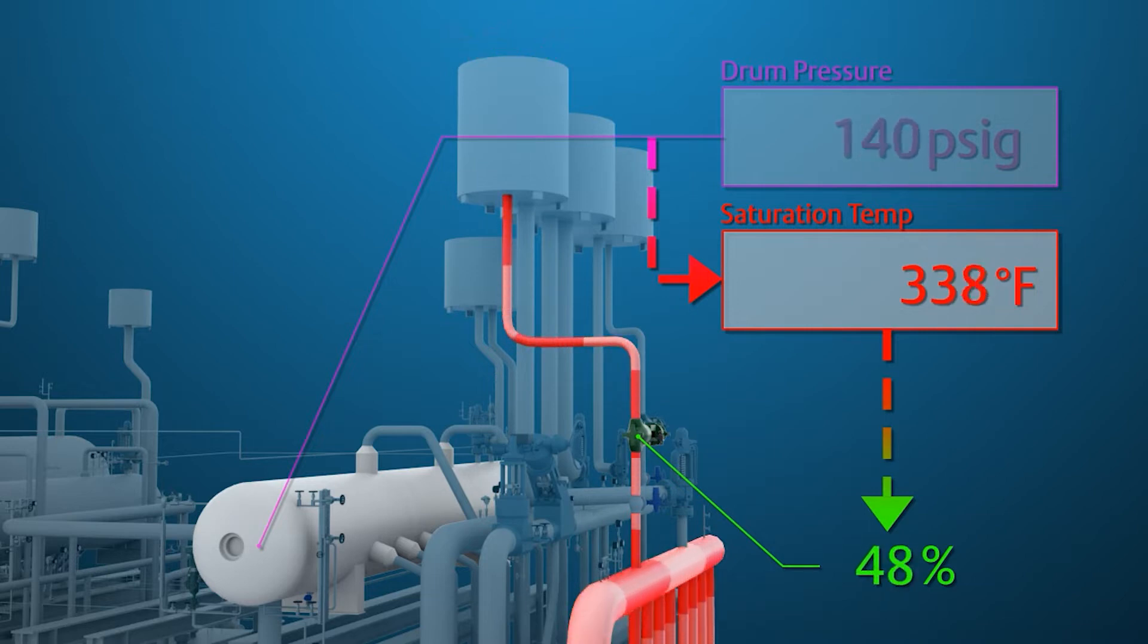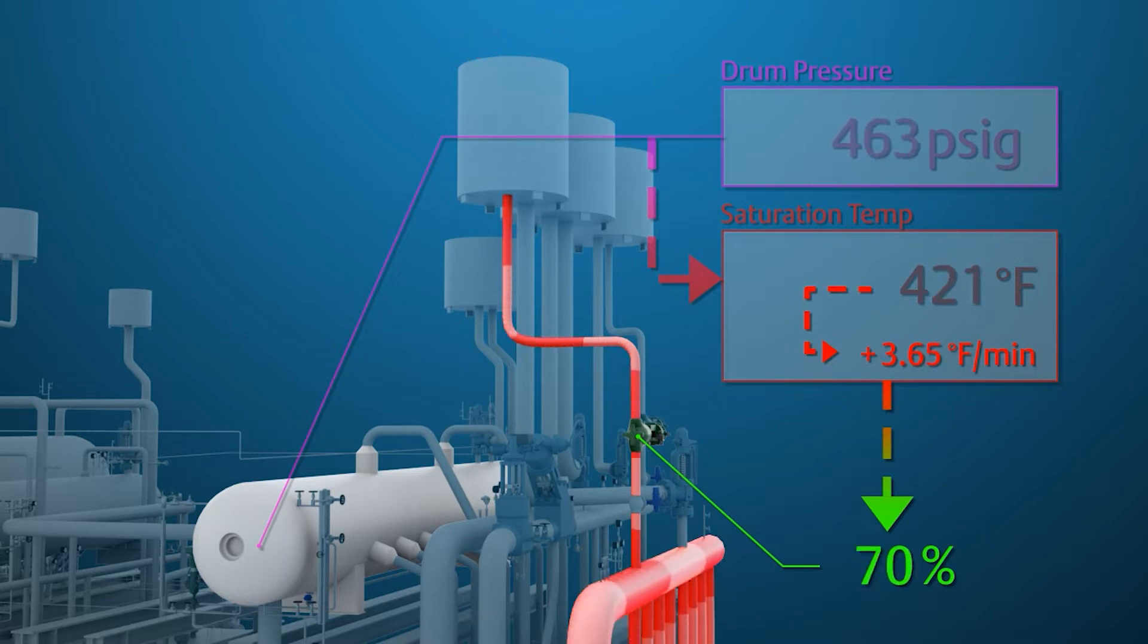The sky vent will open as the temperature starts to rise. If the temperature change rises above the set point, the sky vent will continue to open to reduce the pressure rise. The sky vent will open or close to maintain the temperature rise in the steam drum at its set point.